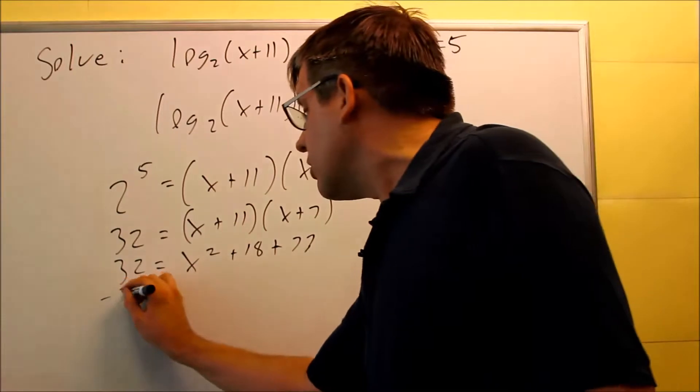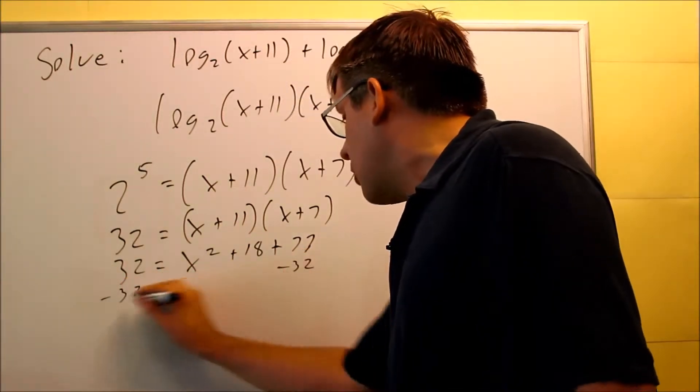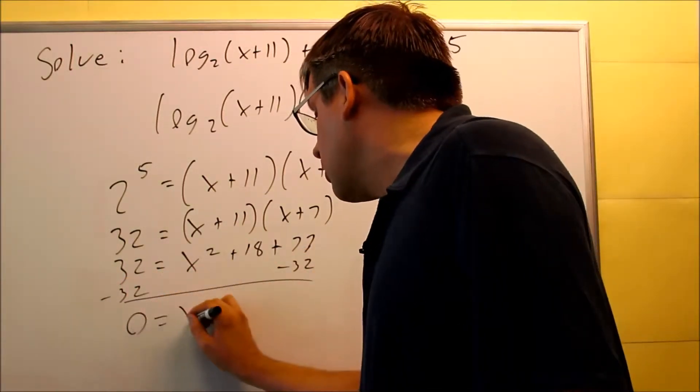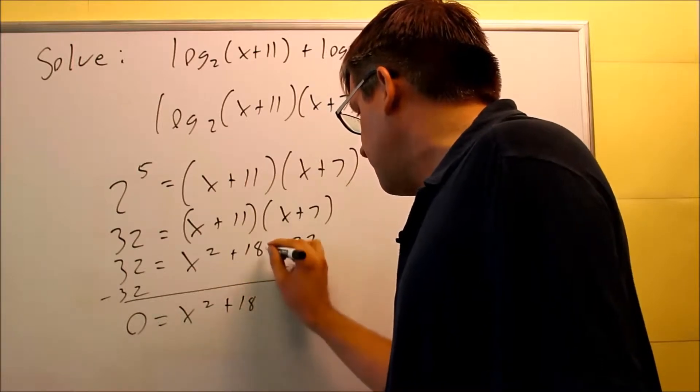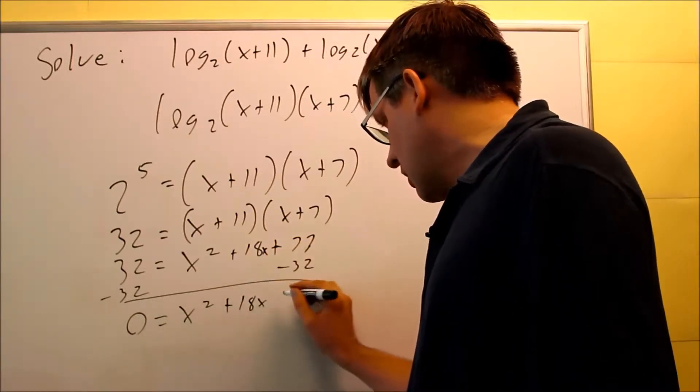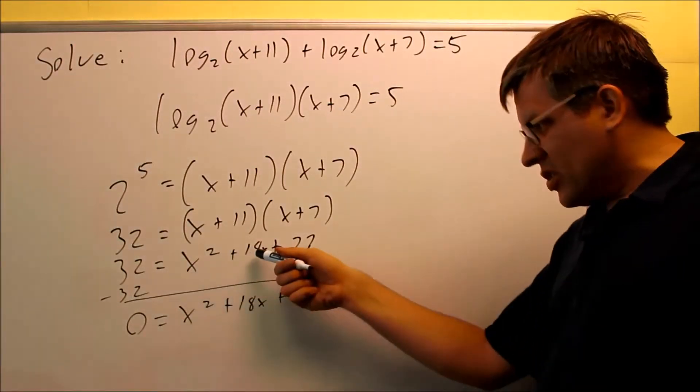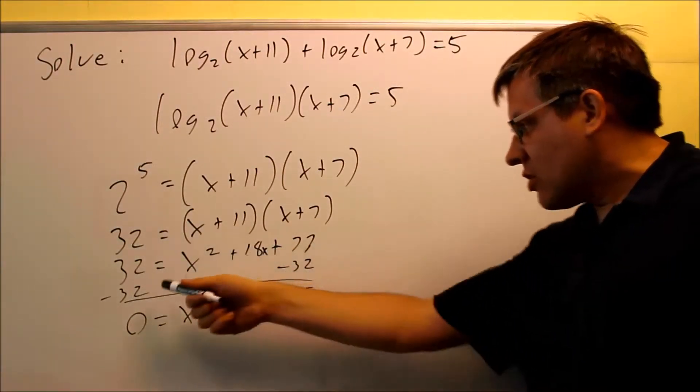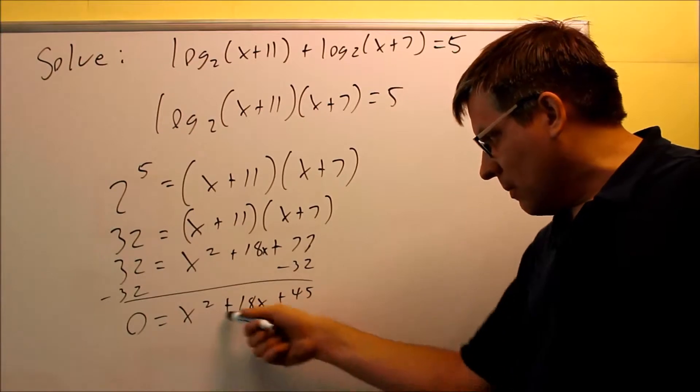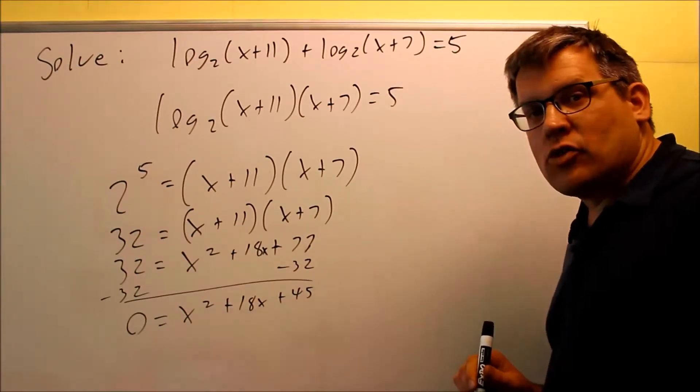Now I want us to subtract the thirty-two from both sides. Zero you get there, this is x squared, 18x plus forty-five. So x squared plus 18x plus seventy-seven minus thirty-two from both sides, you get 18x plus forty-five as a result.